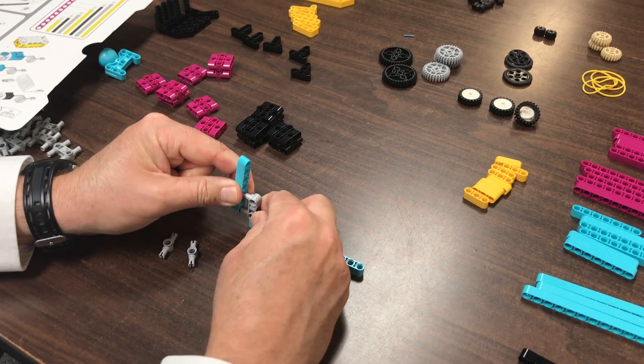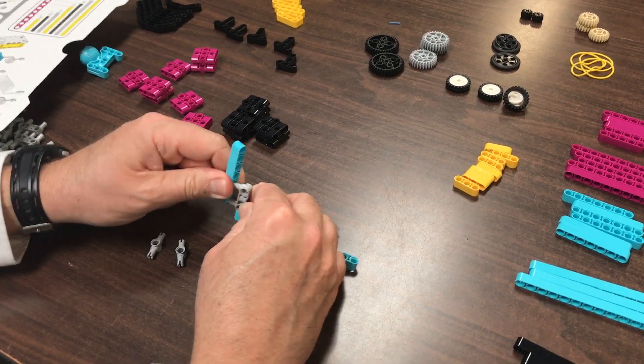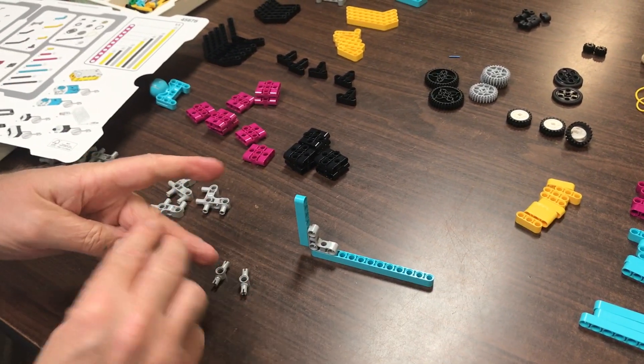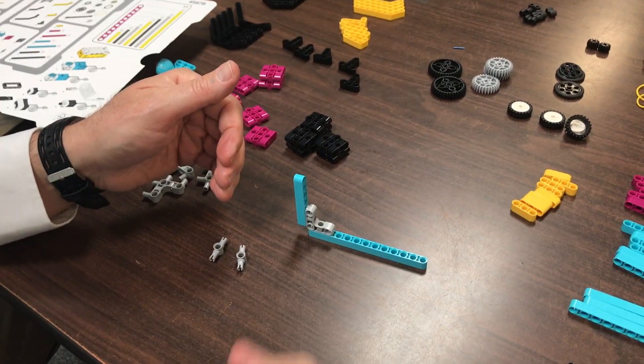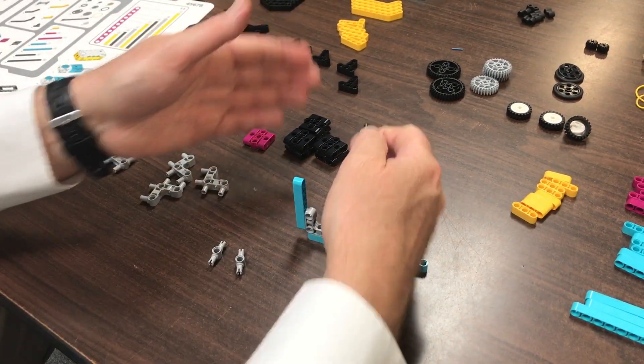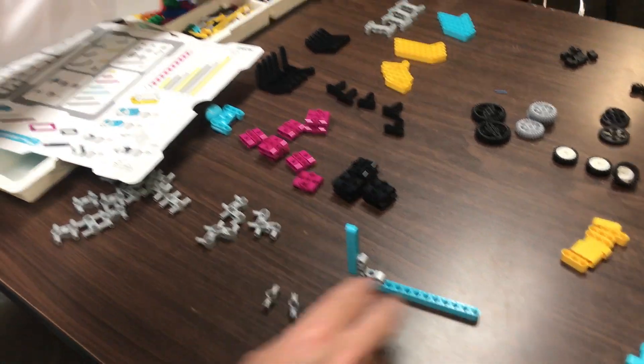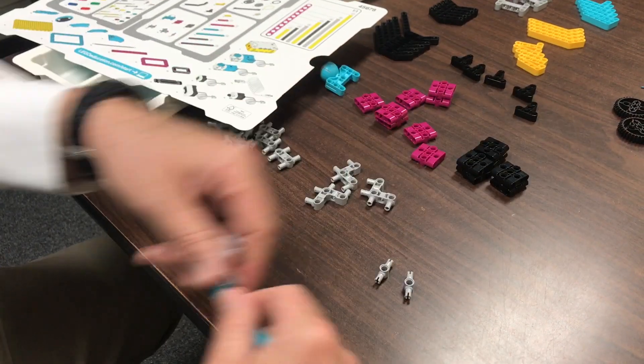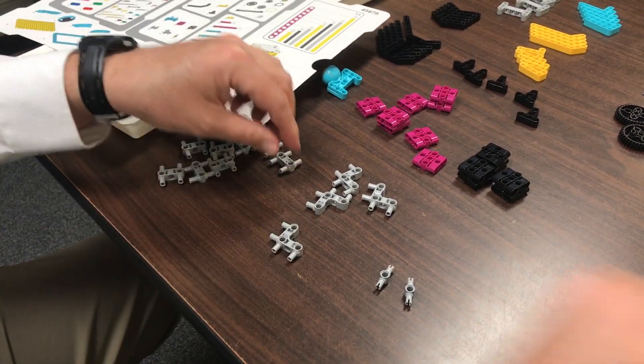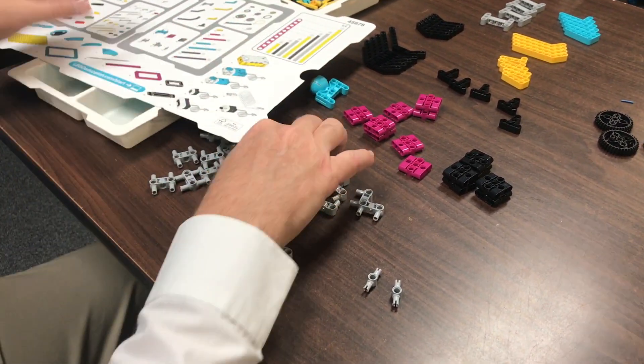All of a sudden now you've got beam support this way but then you can attach another beam vertically and then also if you want to, stick some pins in here and start building out in this direction as well, forward and backward. That's the advantage of the cross blocks, really good for 90 degree stability.